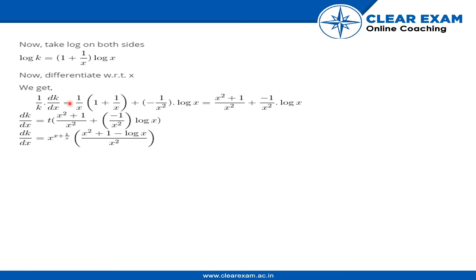Differentiating with respect to x we get (1/k)·(dk/dx). Applying the product rule: (1/x)·(1 + 1/x) + (-1/x²)·log x, which equals (x² + 1)/x² - log x/x².